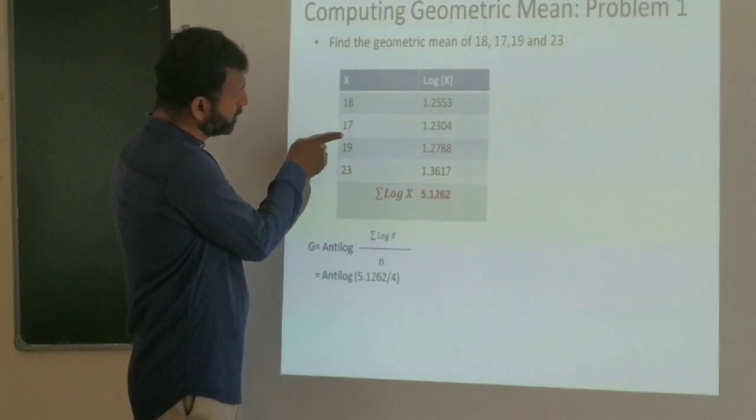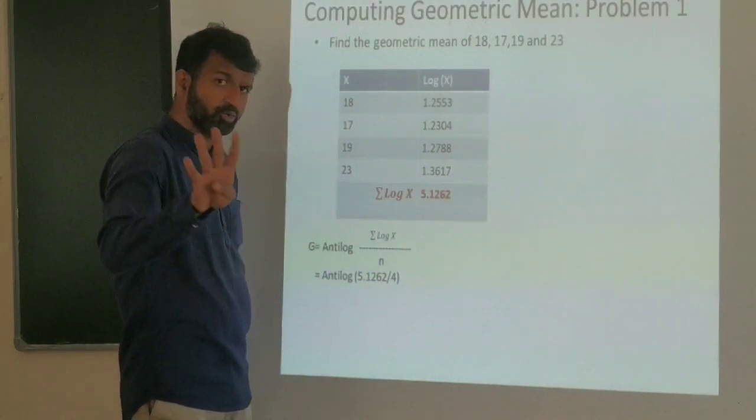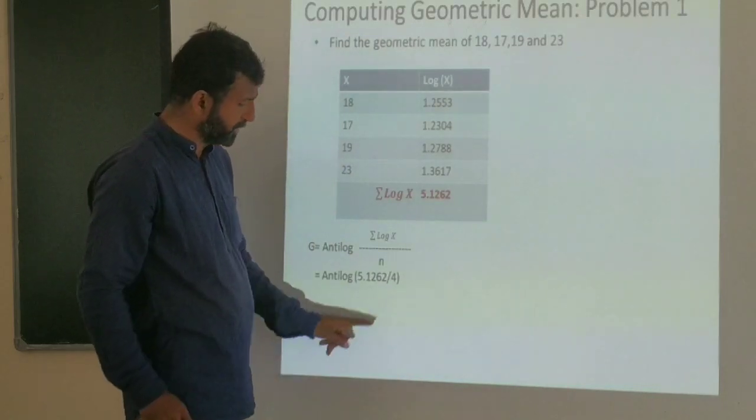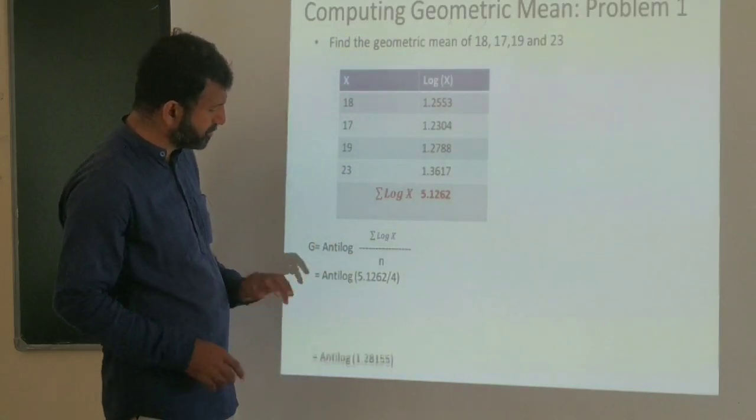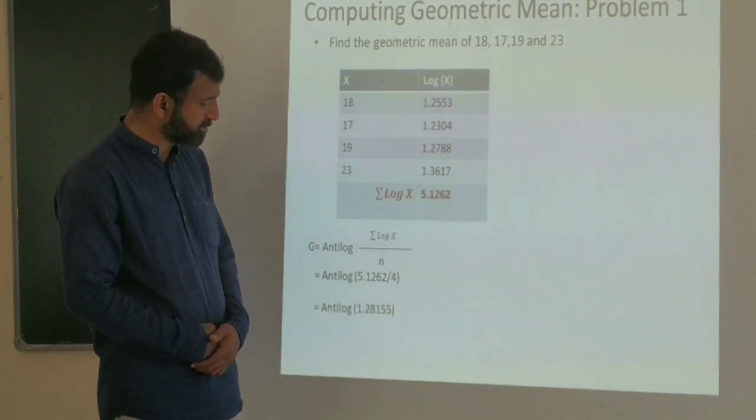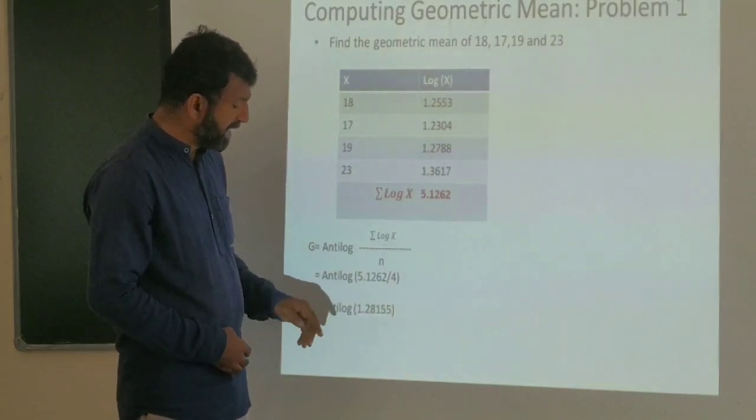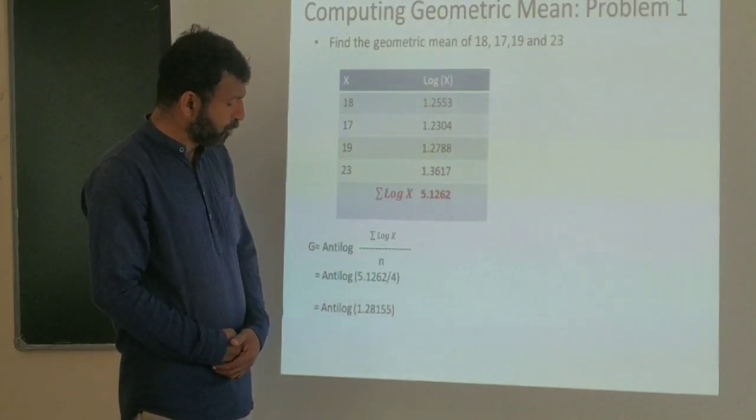The number of observations n is 4. So we compute antilog of 5.1262 divided by 4, which equals antilog of 1.2816. The geometric mean G is approximately 19.12.